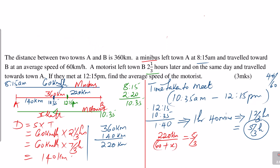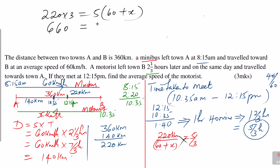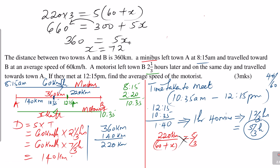Cross-multiplying: 220 × 3 = 5 × (60 + x), so 660 = 300 + 5x. Taking 300 to the other side: 660 − 300 = 360, therefore x = 360 ÷ 5 = 72. The average speed of the motorist, denoted by x, is 72 kilometers per hour.